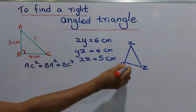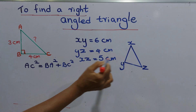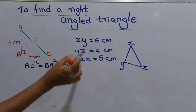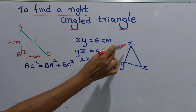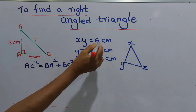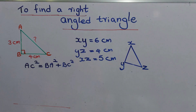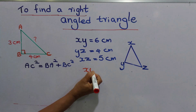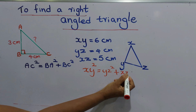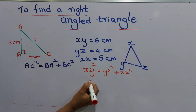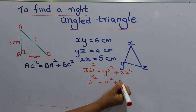Here are the given values of this triangle: XY equals 6 centimeters, YZ equals 4 centimeters, and XZ equals 5 centimeters. To find whether this is a right angle triangle, we take the longest value, XY, which is 6 centimeters, and write XY squared equals YZ squared plus XZ squared — that is, 6 squared equals 4 squared plus 5 squared.